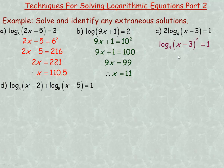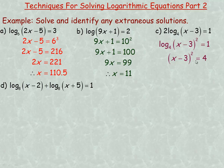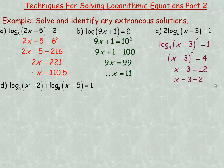We bring the 2 up as an exponent, then rewrite in equivalent exponential form: 4 raised to the power of 1 equals x minus 3 squared. Now we want to solve for x, so we take the square root of both sides. The square root of 4 is 2, and there are two roots — plus 2 and negative 2. Adding 3 to both sides gives x equals 3 plus or minus 2. So there are two solutions: 3 plus 2 equals 5, and 3 minus 2 equals 1.